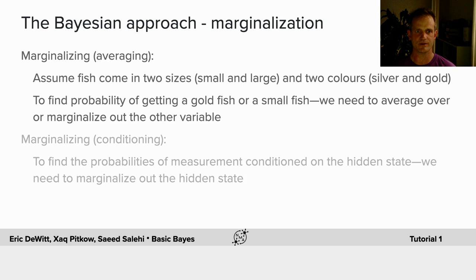And there's conditioning. To find the probability of a measurement conditioned on the hidden state, we need to marginalize out the hidden state.